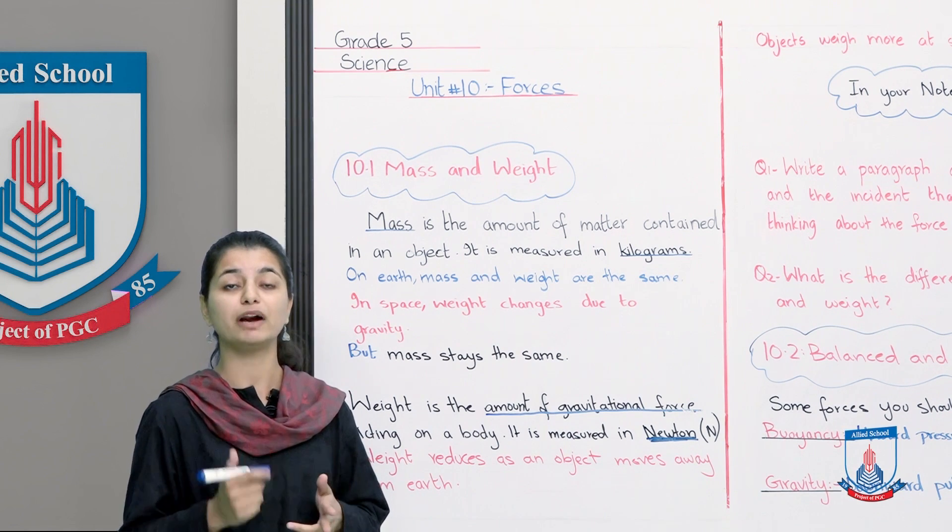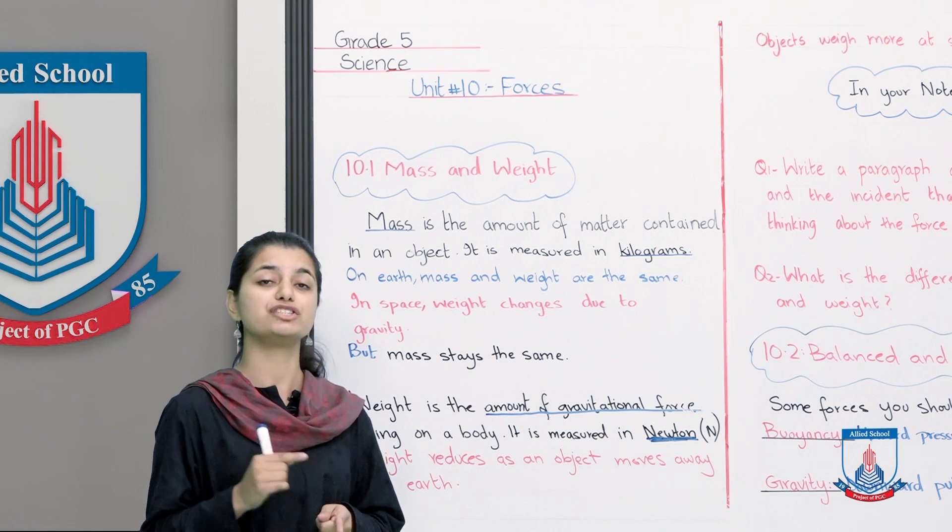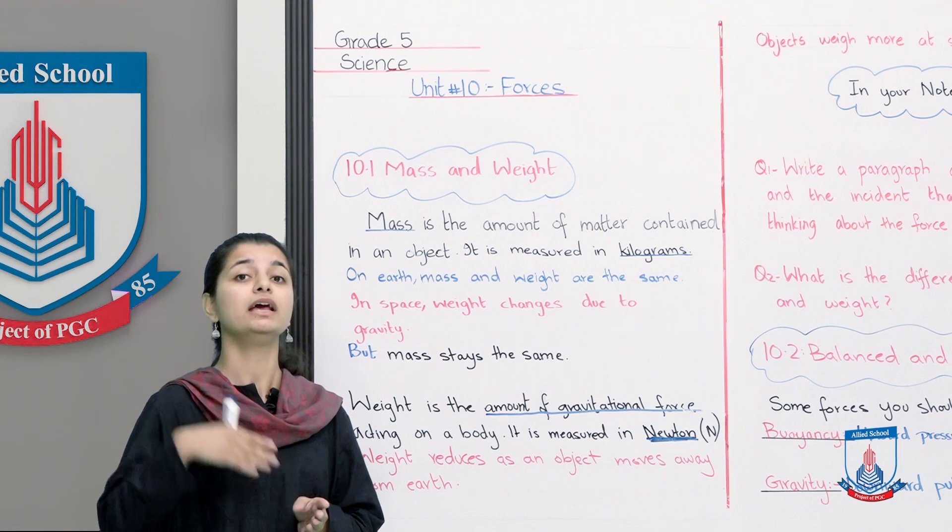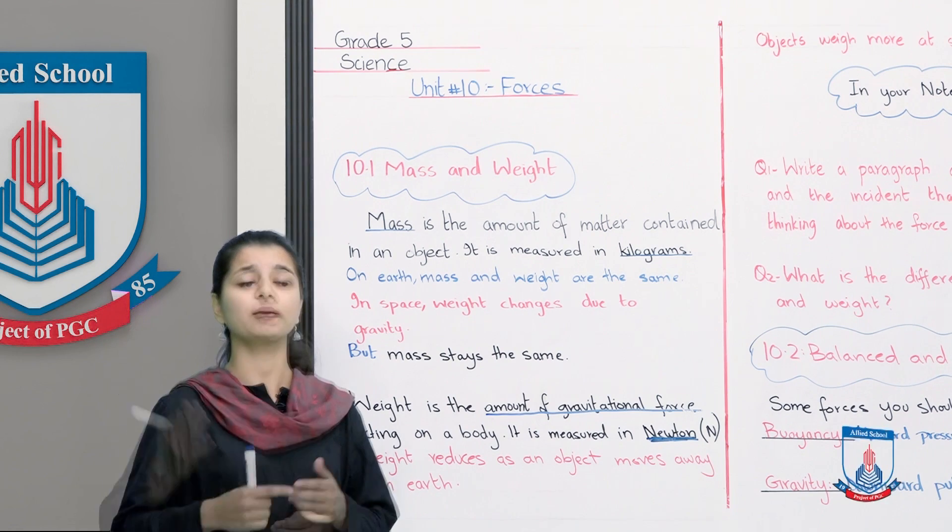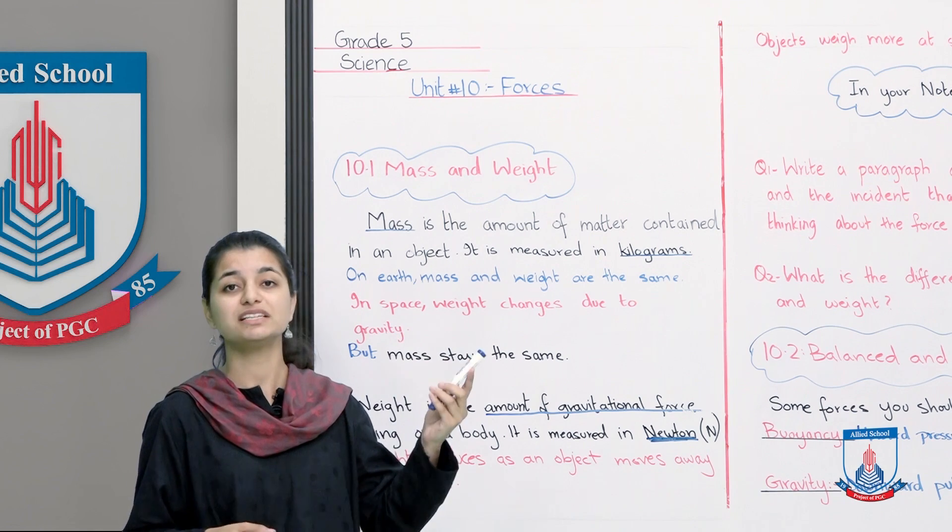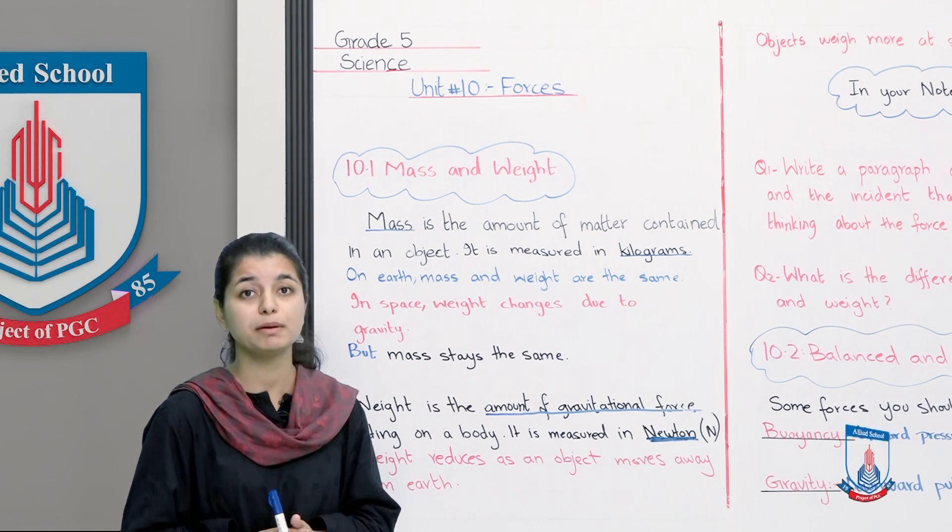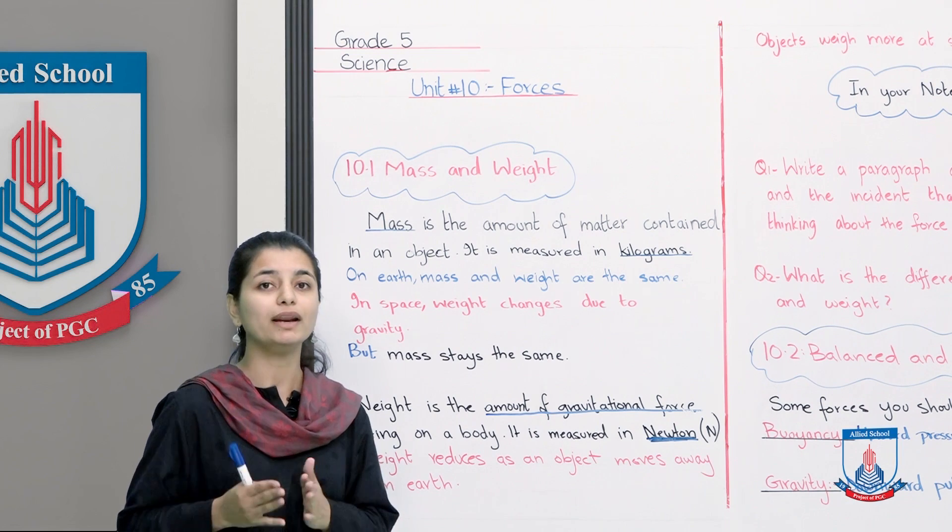So now when we know the difference between both, we're saying that mass will remain the same everywhere. Whether you see the mass of something on earth, you see the mass of something in space, you see the mass of something on any other planet - if this marker's mass is 100 grams here, then in any space or any planet it will remain 100 grams.